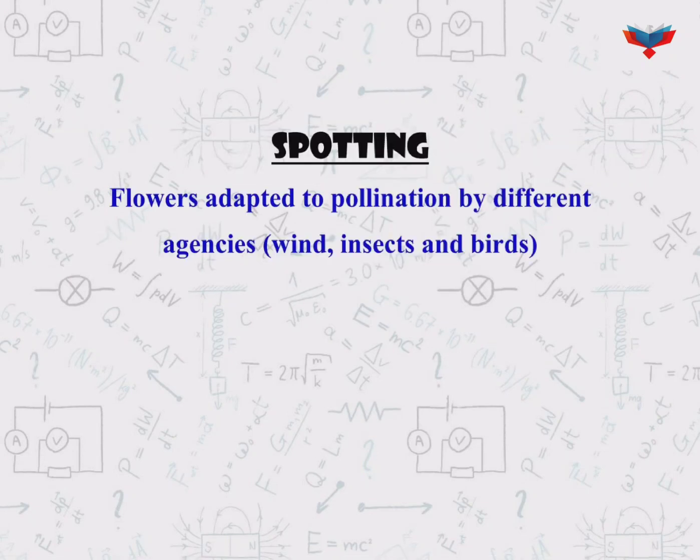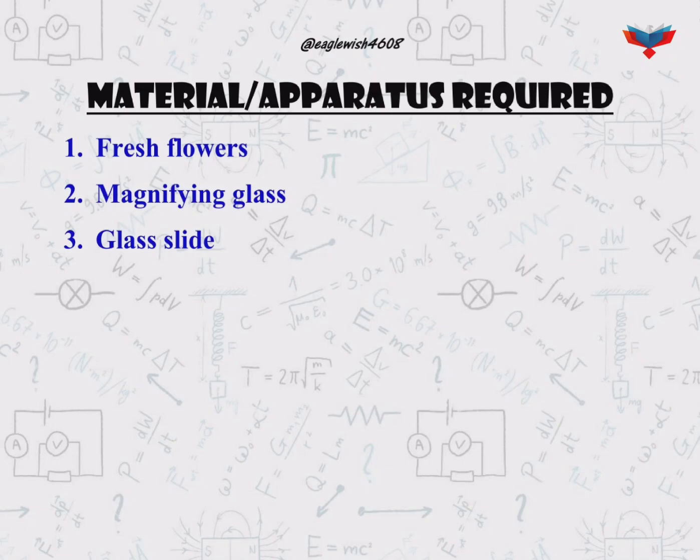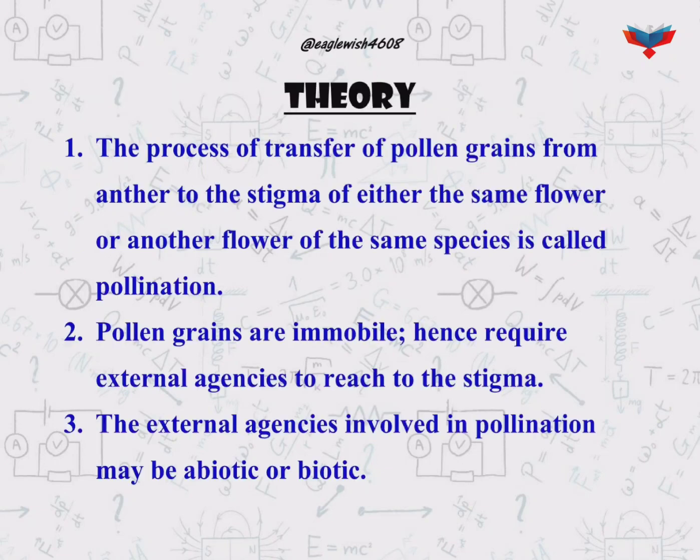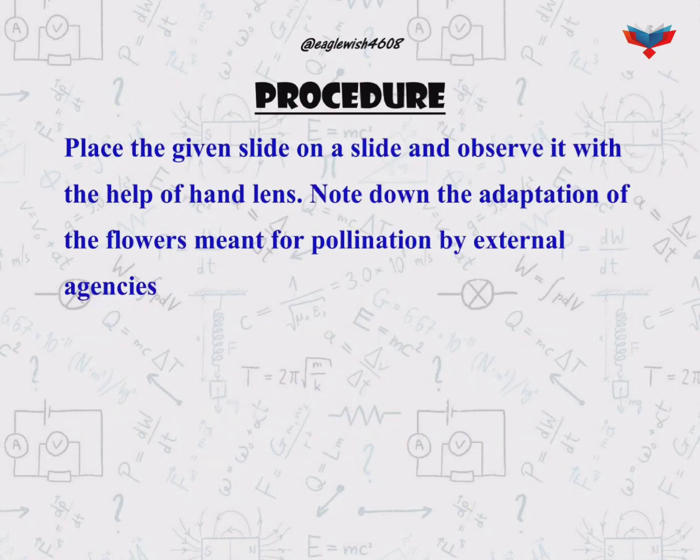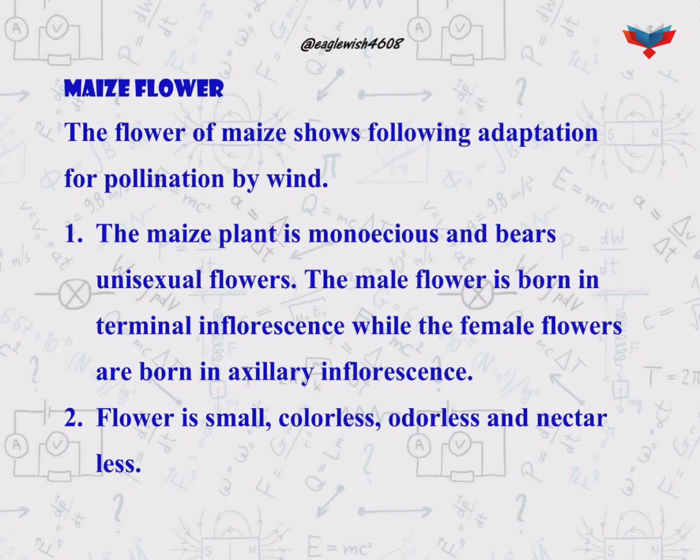The aim of the spotting is to study flowers adapted to pollination by different agencies like wind, insects, and birds. The material required in this practical is fresh flowers, a magnifying glass, and a glass slide. In theory we will mention about pollination, biotic and abiotic agents of pollination. After theory we will write the procedure.